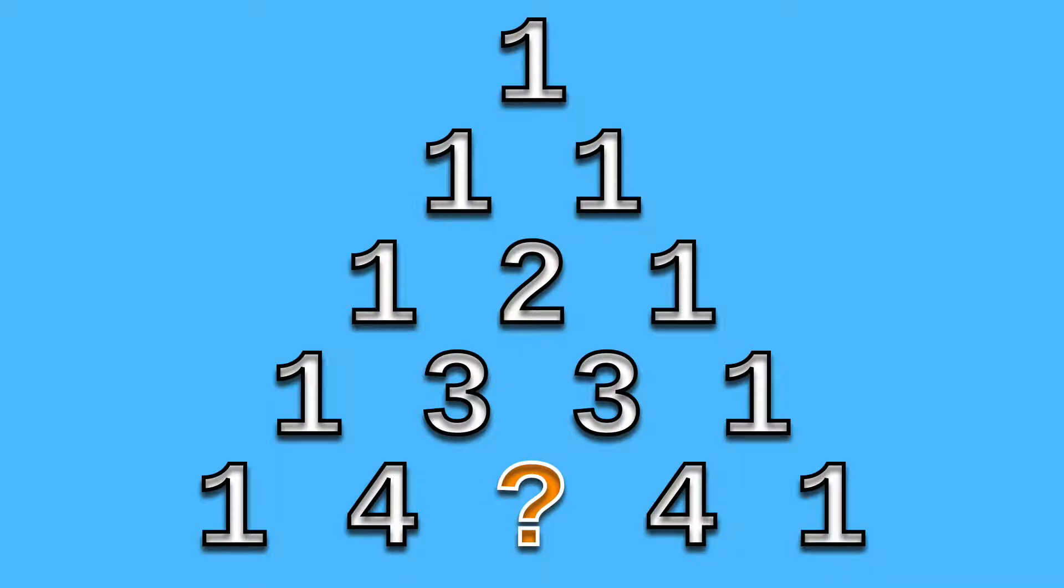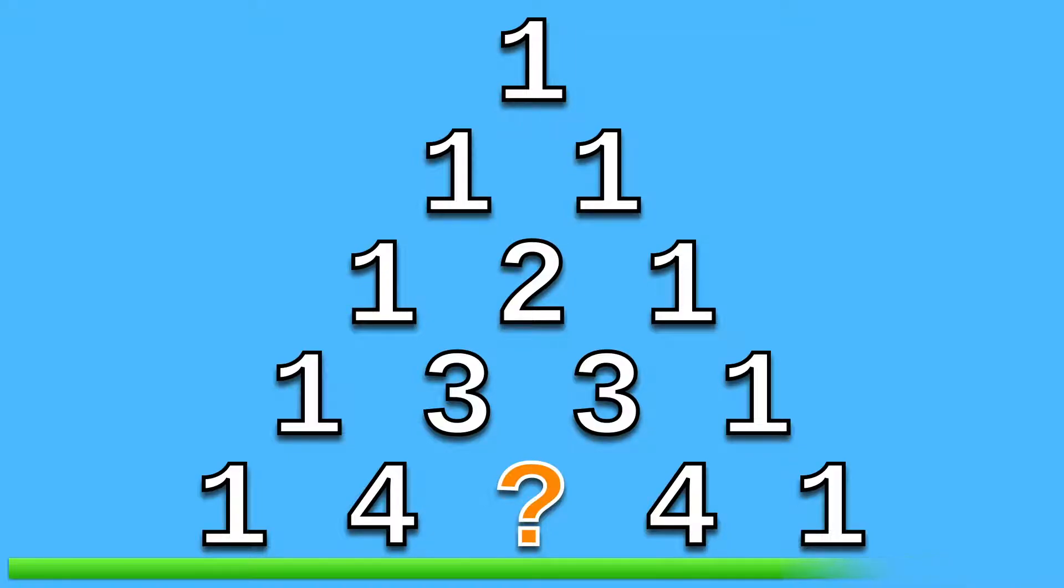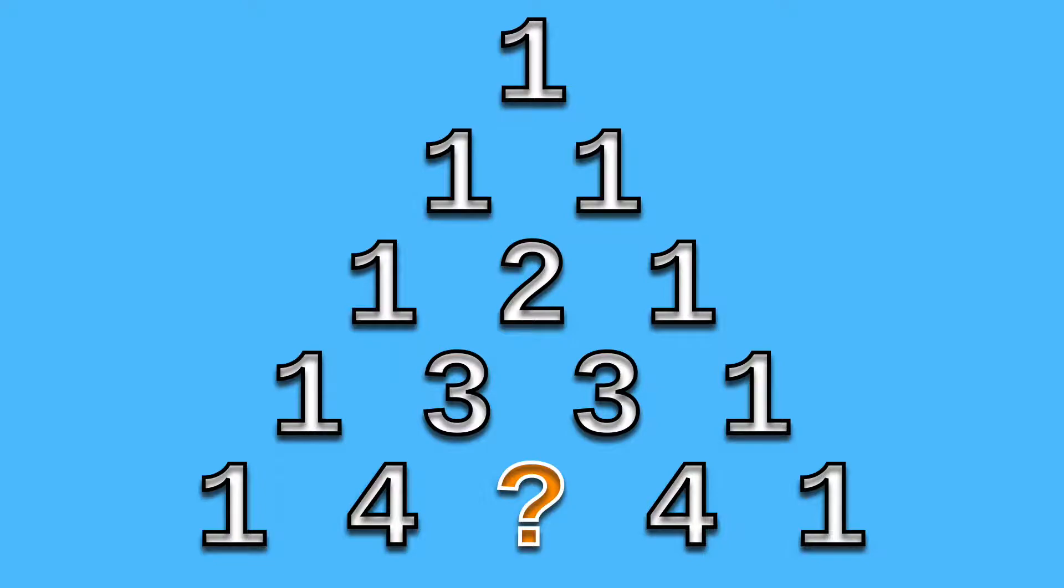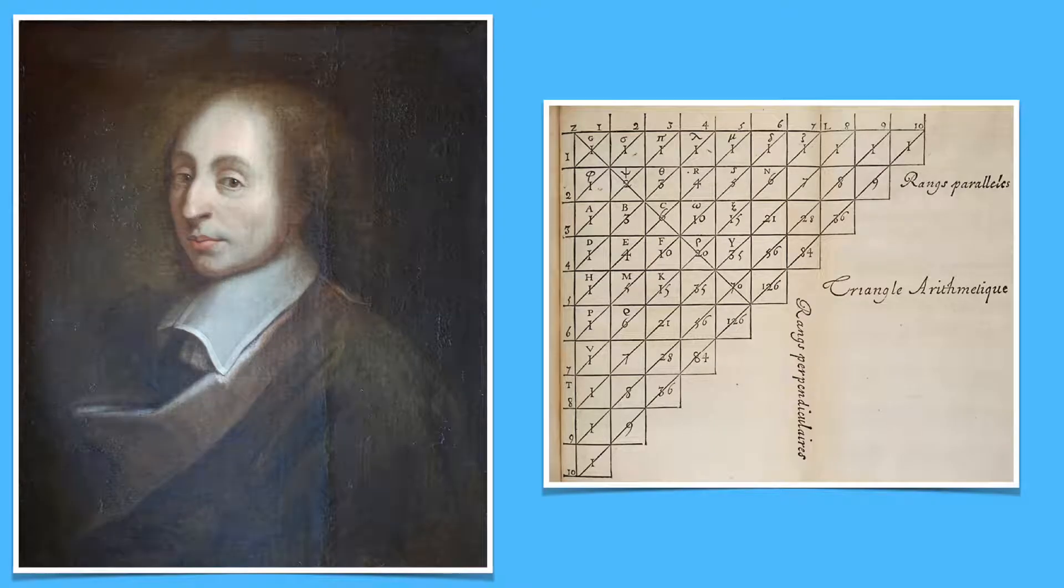What is the missing number in this triangle of numbers? This formation is known as Pascal's Triangle, attributed to French mathematician Blaise Pascal.